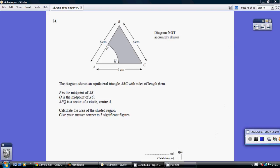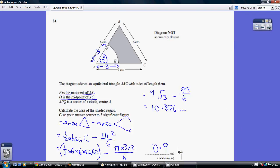Question 24. We've got to work out the area of the shaded region. That's the area of the triangle ABC, take away the area of the sector APQ.